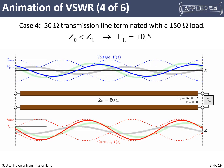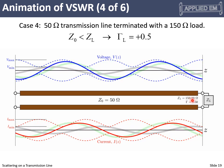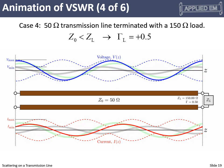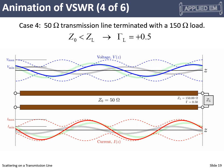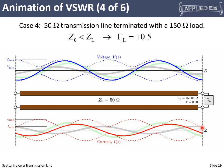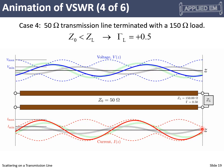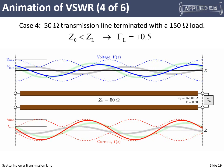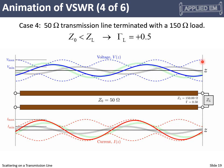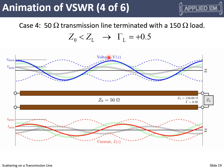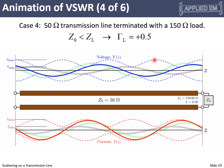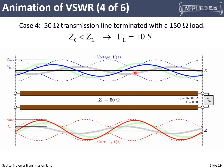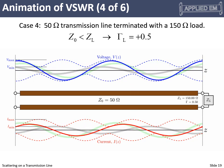Here we have another purely resistive load of 150 ohms, chosen to give a positive 0.5 reflection coefficient. Things look similar, except now at the load we have a minimum for the current and a maximum for the voltage — the opposite of the previous case. Everything else remains the same: the maximum swing or minimum repeats every half wavelength, maximums of voltage correspond to minimums of current and vice versa.